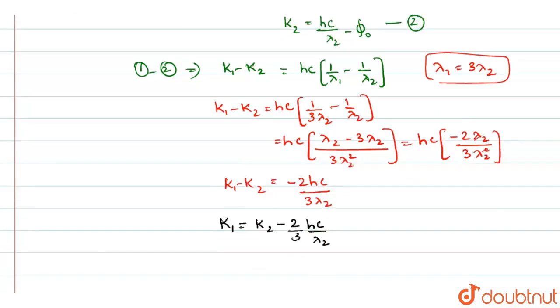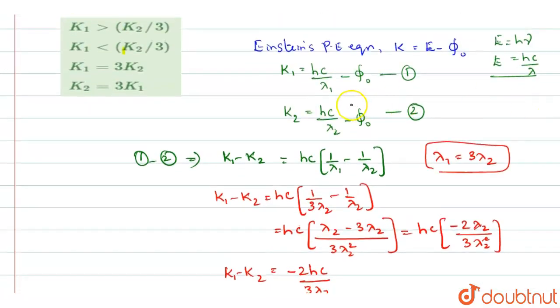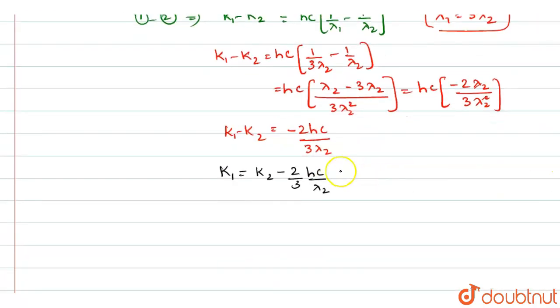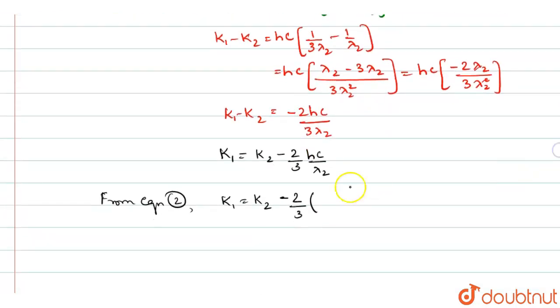Now in this H C by lambda 2, we will retain it as it is. And we shall substitute H C by lambda 2 here. In this equation, H C by lambda 2 is what? K2 plus phi naught. So in place of H C by lambda 2, from equation 2, K1 becomes K2 minus 2 by 3, H C by lambda 2 will be K2 plus phi naught.